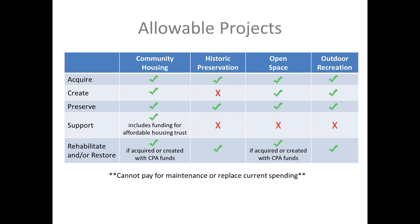We can rehabilitate or renovate affordable housing, but only if it was acquired or created with CPA funds. For historic preservation, we can acquire historic resources, preserve and rehabilitate. This is the only category where we cannot create historic resources, because it requires time for an object to become historic.